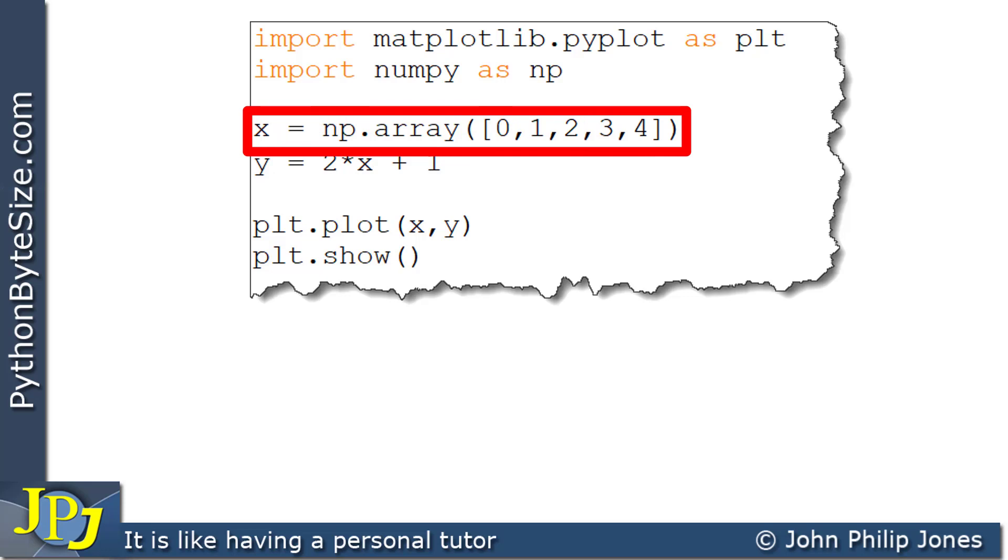x, that contains 0, 1, 2, 3, and 4. And on this line, I'm creating another NumPy array called y, and this is the calculation that is broadcast across all of the values of x. So this will calculate 2x plus 1 for all of these numbers here, for 0, 1, 2, 3, and 4.